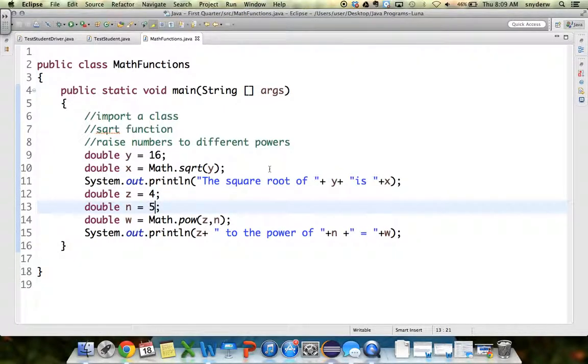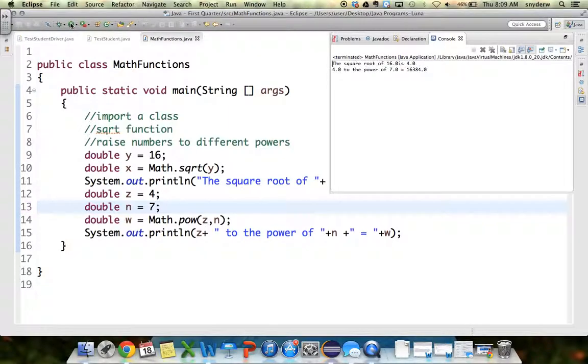So now 4 to the 5th power is 1,024. So now all I have to do is switch this number here to 7. 4 to the 7th power is 16,384.